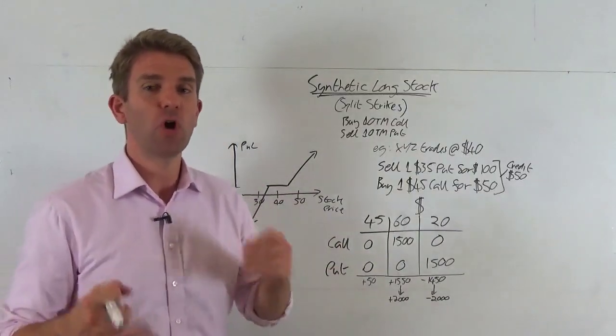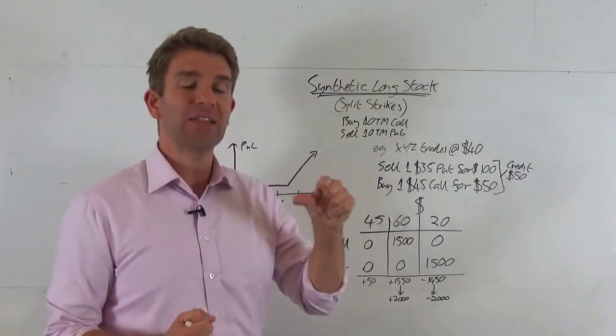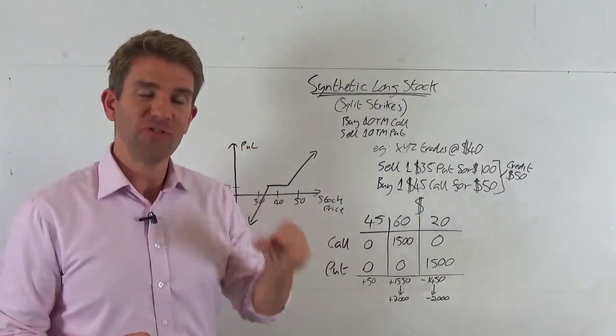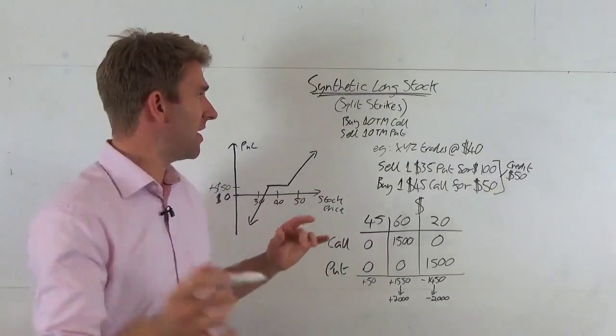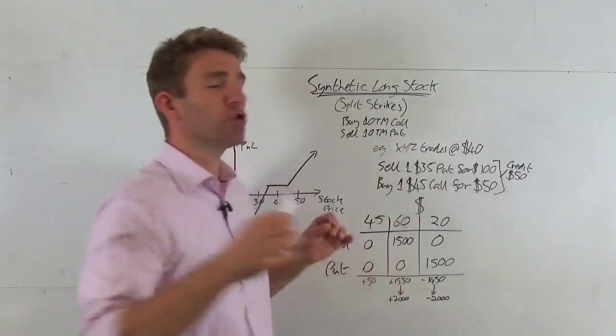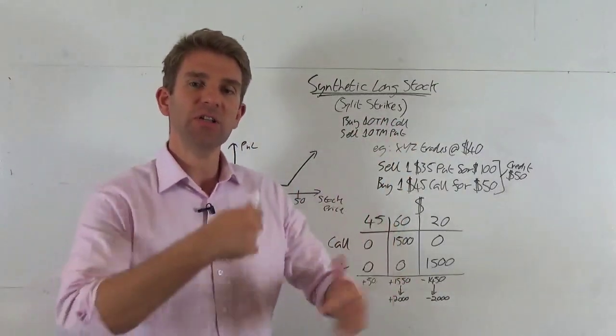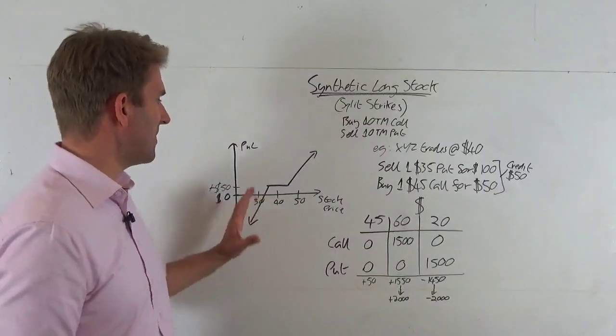If you do that both at the money then you are creating a really linear synthetic long. However, if you use split strikes you are changing the dynamic slightly. You are effectively being less aggressive and protecting yourself from a small amount of downside.